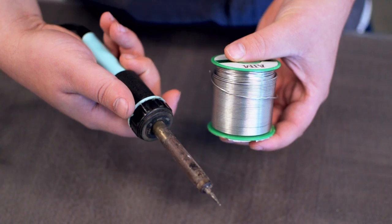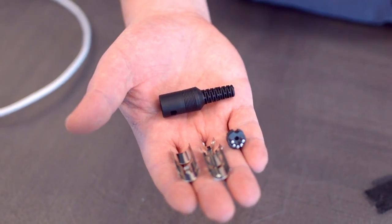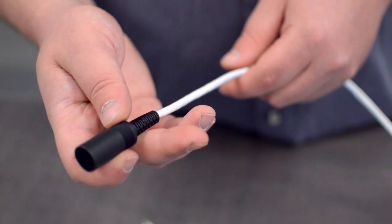Low voltage cable, wire strippers, solder and soldering iron, and the DIN connector. Start by inserting the plastic boot over the jacket.